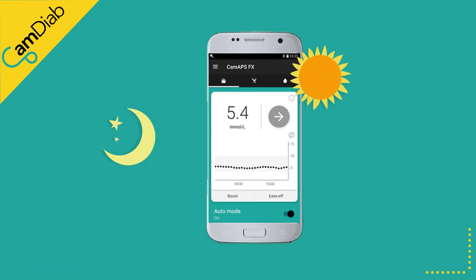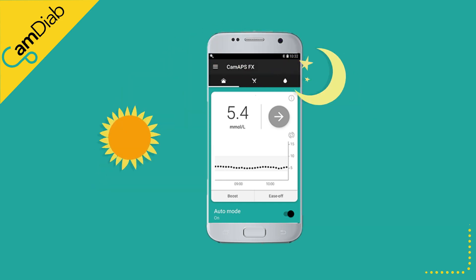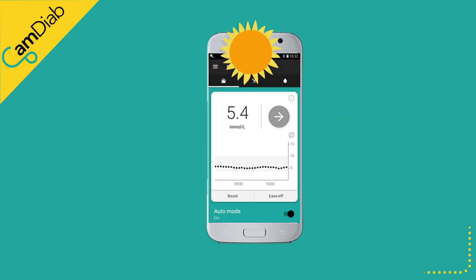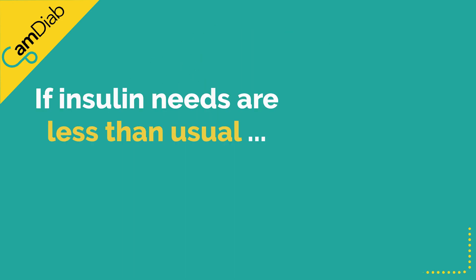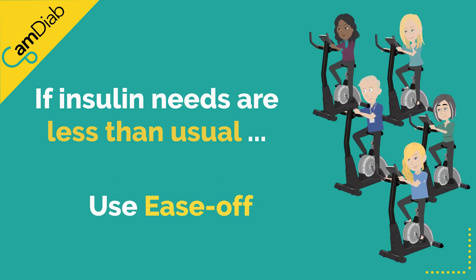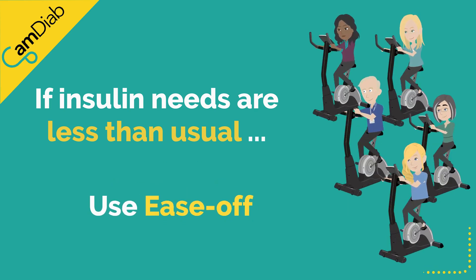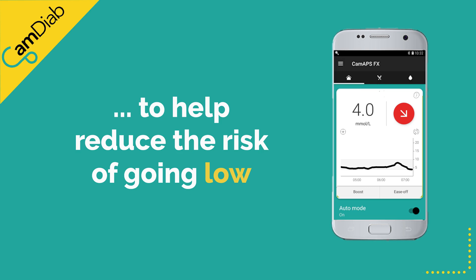The CAM-APS-FX algorithm's learning controls the amount of insulin that is normally needed across the 24 hours of the day. However, if someone temporarily needs less insulin than usual, such as when they are being physically active, they may like to use Ease-Off. Ease-Off makes CAM-APS-FX deliver less insulin than it normally would predict is needed, to help reduce the risk of going low.